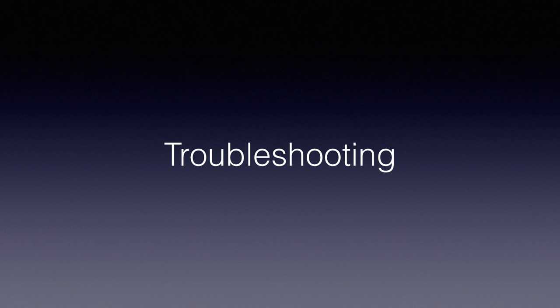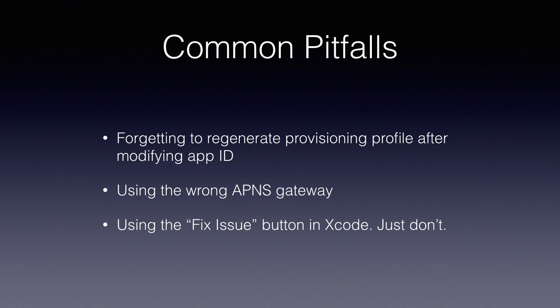Push is great when it works, but it's not always smooth sailing. Common pitfalls: people forget to regenerate their provisioning profile after modifying their app ID — Xcode can do this for you, but most people redownload and drag it back in. If you're using the wrong APNS gateway, you get the wrong token, push the wrong one, and Apple will say they don't know about that device. You might also be tempted to use the Fix Issue button in Xcode — just don't. It's not going to fix your issue.